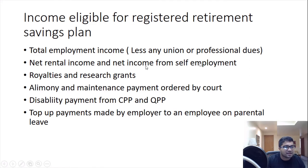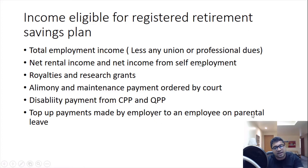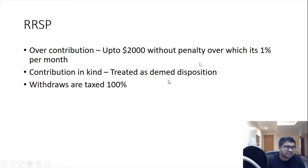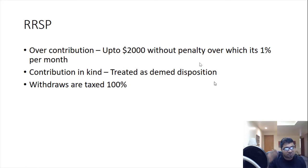Investments that qualify for RRSP include: cash or bank deposits, GICs, government bonds, shares and debt obligations of Canadian public companies, shares of foreign publicly listed companies on prescribed exchanges, and investment-grade foreign government bonds. Investments NOT allowed in RRSP: shares and debt of private companies, real estate (except REITs), commodity and financial futures, and personal property such as artwork, jewelry, manuscripts, and stamps. Over-contributing to RRSP by more than $2,000 results in a penalty of 1% per month.